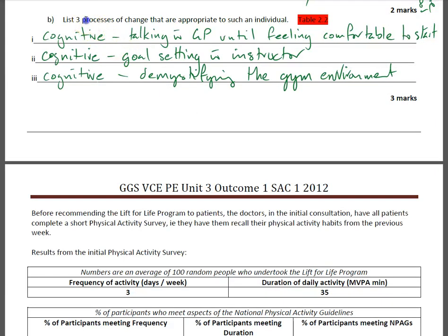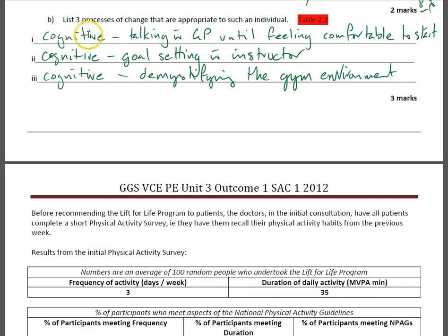List three processes of change that are appropriate to such an individual. The process of change questionnaire is table 2.2 from our textbook on pages 46 and 47. From a cognitive perspective: talking with a GP until feeling comfortable to start; goal setting with instructor; demystifying the gym environment. Each one of these refers to the individual cognitively — meaning we're changing their knowledge.